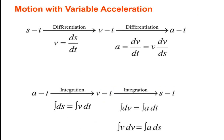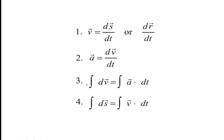If an object moves under variable acceleration, use differentiation or integration. Taking the derivative of the position-time graph gives velocity; taking the derivative of velocity with respect to time gives acceleration. Acceleration can also be written as v·(dv/ds). Going from displacement to velocity to acceleration requires differentiation; the reverse requires integration.